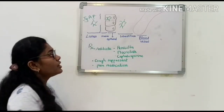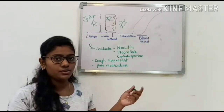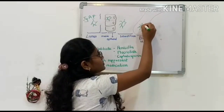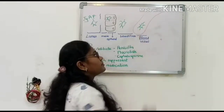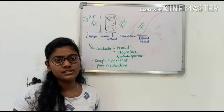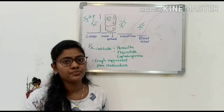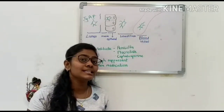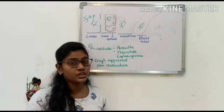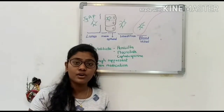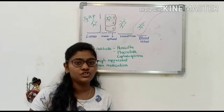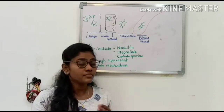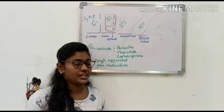The bacteria can also move into the adjacent bloodstream, that is into the blood vessels. When the bacteria reaches the blood vessels, it causes bacteremia. Through this hematogenous route, the bacteria reaches the brain, moves towards the brain, and causes infection of the meninges — the protective covering of the brain — causing meningitis.